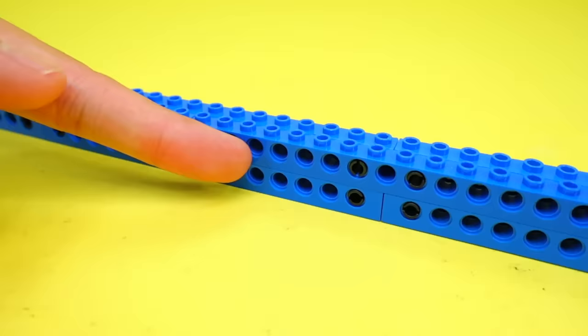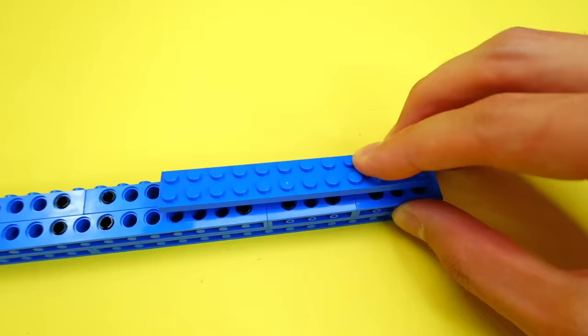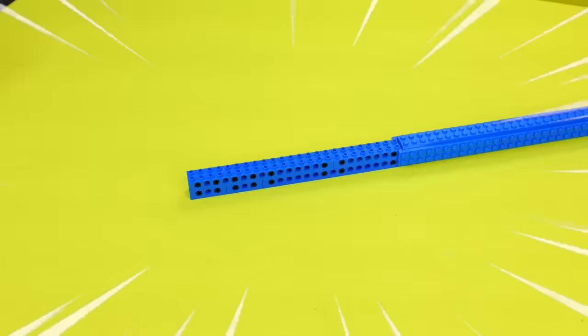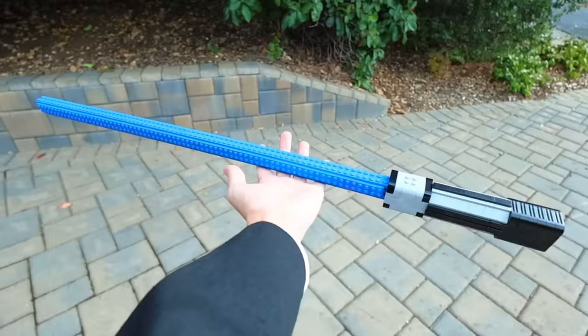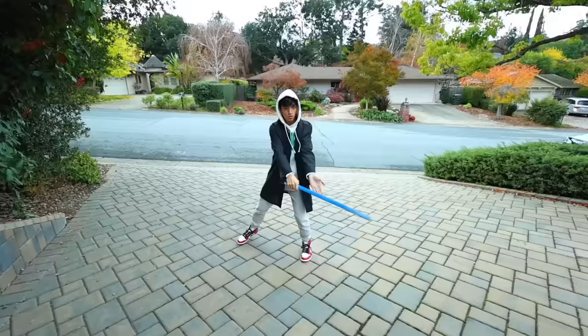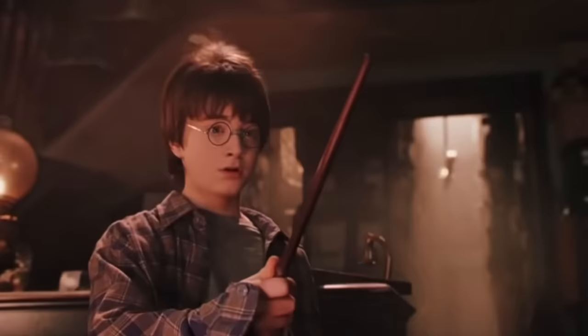Another Lego weapon I want to build is a lightsaber. I'm going to use these long Technic pieces to build a sturdy blade. Then I'm going to cover these ugly holes up with plates. And now that our blade is finished, I'm going to build the handle of the lightsaber. And just like that, here's a life-size Lego replica of a lightsaber. And it's actually sturdy enough to where you can do tricks with it.